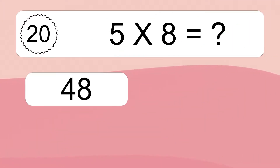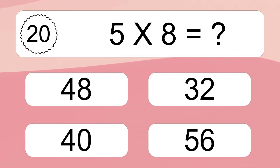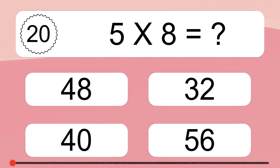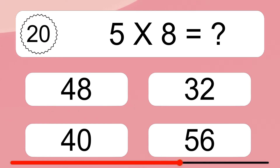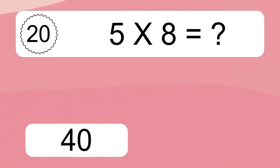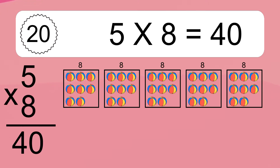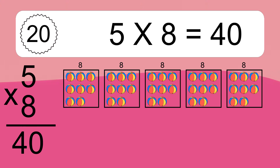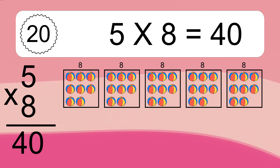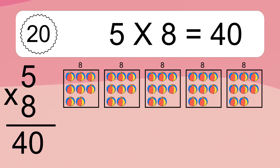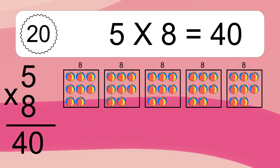5 times 8 equals what? 5 times 8 equals 40. We have 5 boxes and each box has 8 colorful balls inside. If you count all the balls in all the boxes together, you will have 5 times 8 balls. This equals 40 balls.